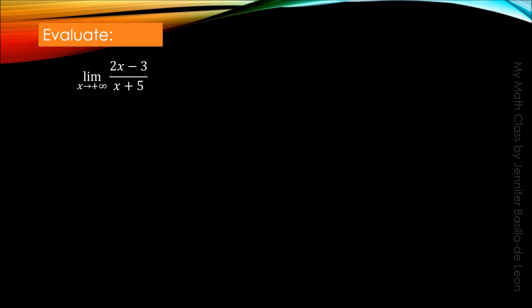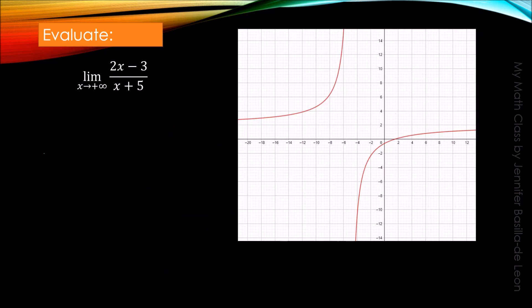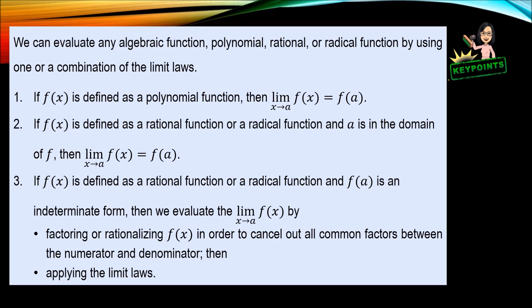Let's verify our answer using the graph of the function. Note that the function is asymptotic to y equals 2. We can trace the portion of the graph corresponding to the limit of (2x minus 3) over (x plus 5) as x approaches positive infinity. Hence, we can say that as the value of x approaches positive infinity, the result is 2.